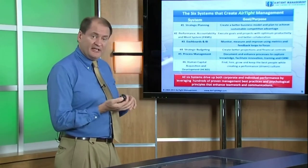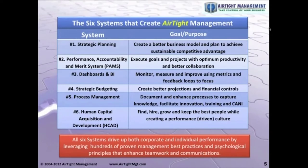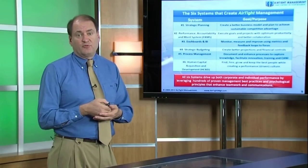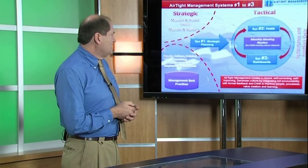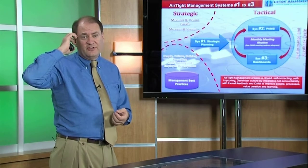The six systems are: strategic planning; PAMs — Performance Accountability and Merit System; dashboards and business intelligence, which are the key performance indicators of the business — people will focus on them if you make them visible and you can project and notice things happening much more easily; strategic budgeting, which is a holistic budgeting process that's more opportunity driven than cost driven; process management, which is documenting and improving processes constantly so that they can be trained and scaled; and Human Capital Acquisition and Development, or HCAD, which is about finding, hiring, and keeping the best people, as well as growing and coaching them so they have a performance culture — a Darwinian meritocracy, a self-adjusting, growing culture.